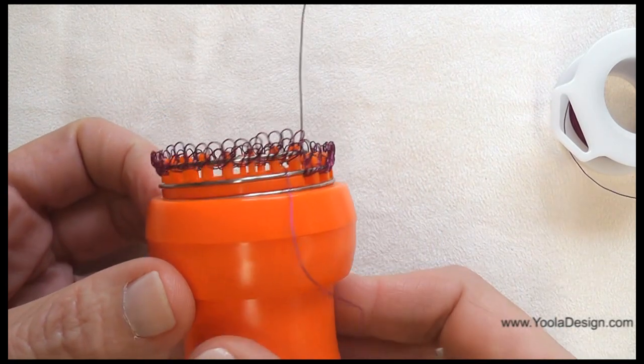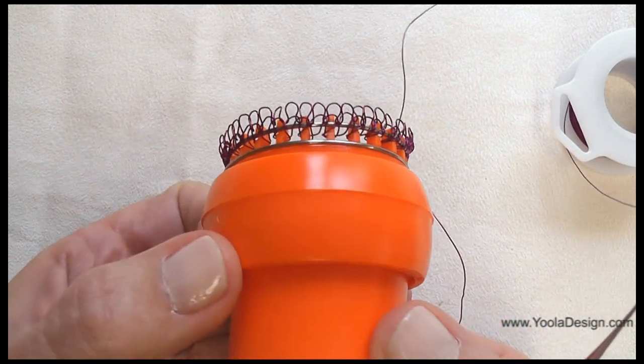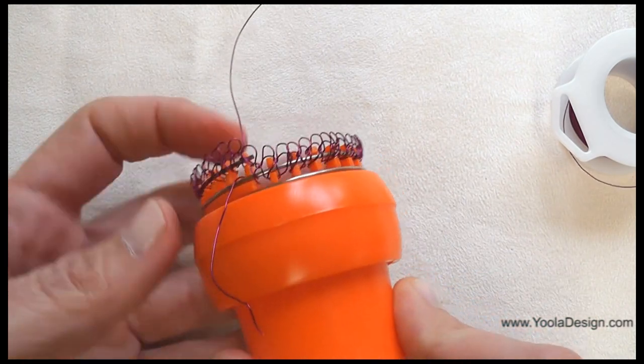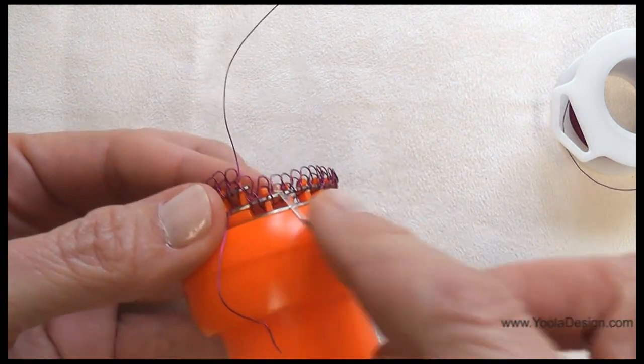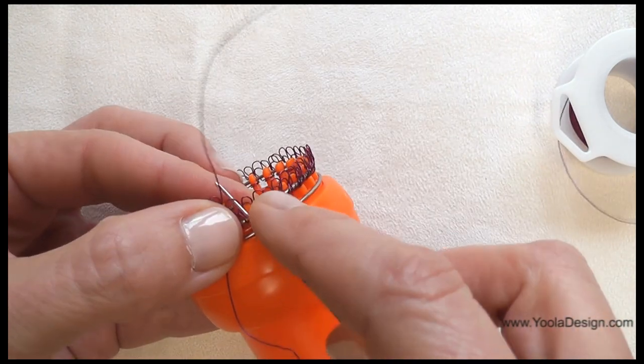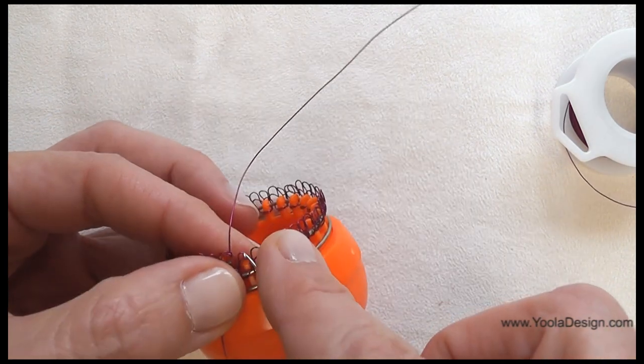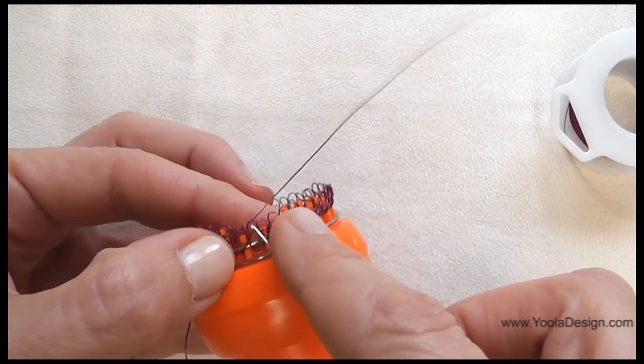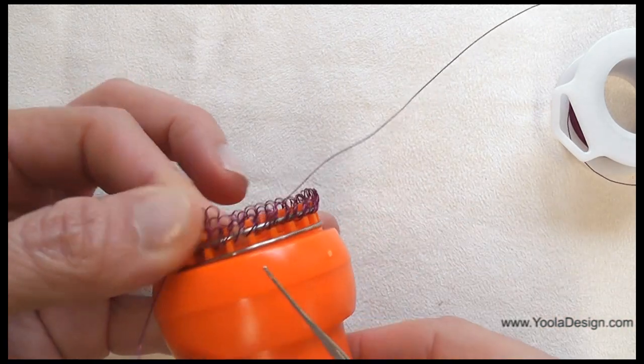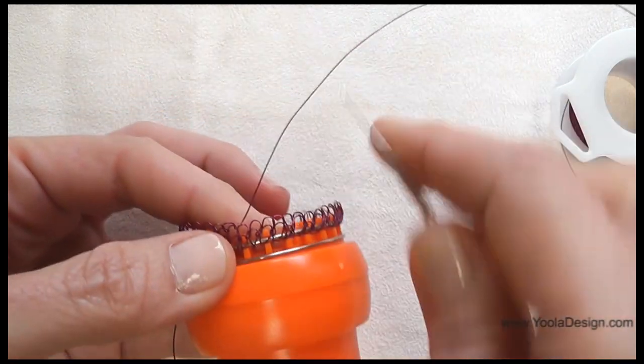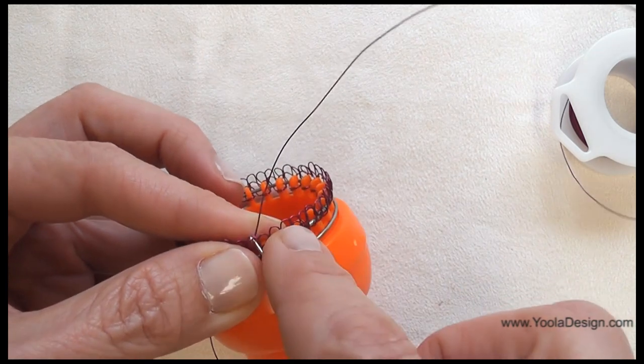When I finish this row, which was actually row number two, this is how it looks like. I'm going to go around pulling another row of stitches. Now it's really simple, it's the same as you do in any other ISK project. I just go around, pull stitches.